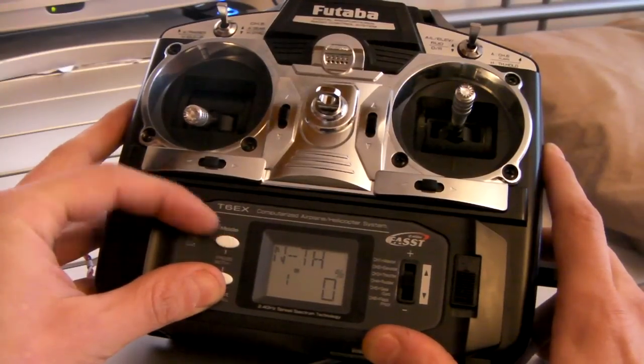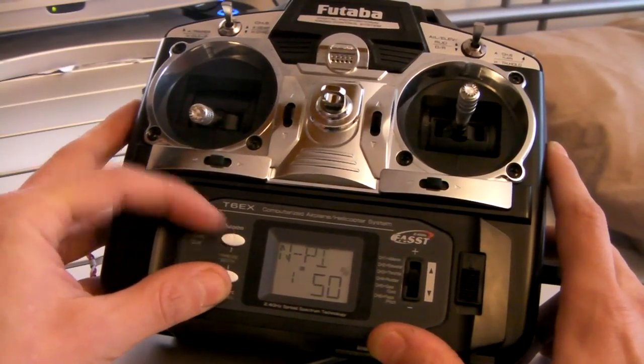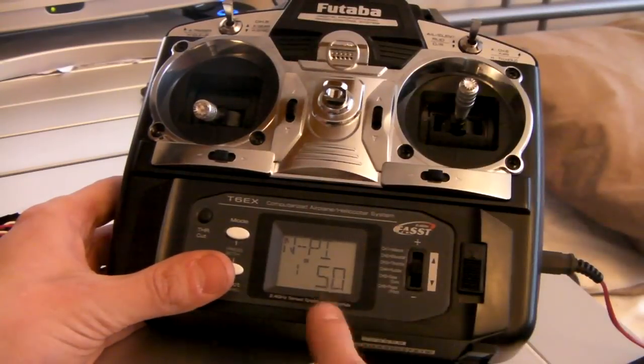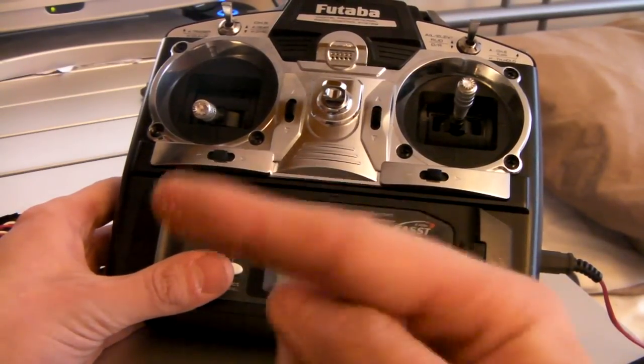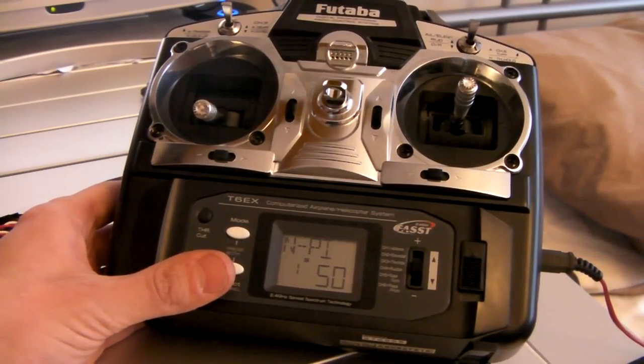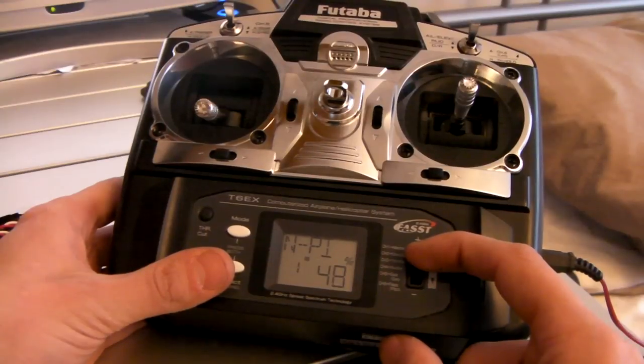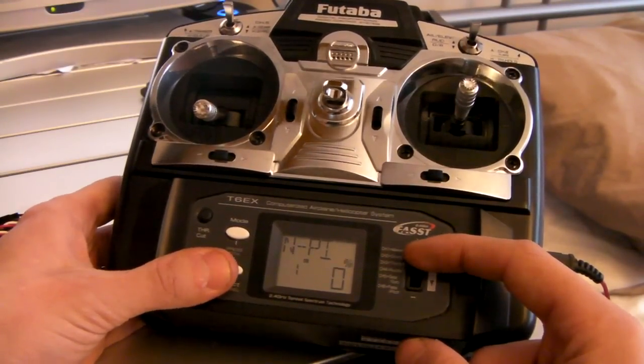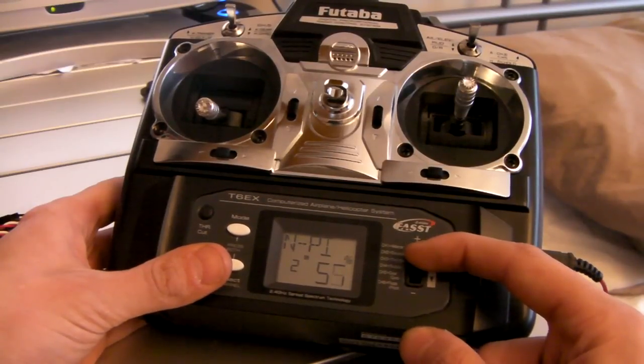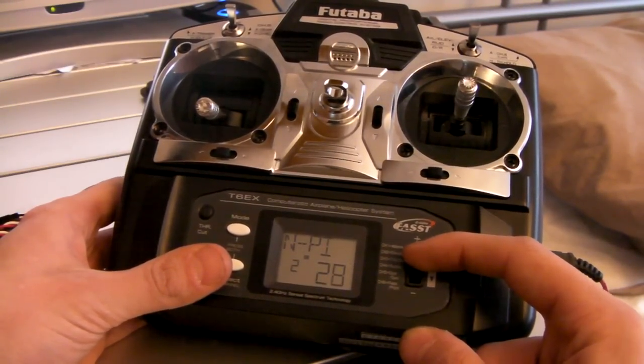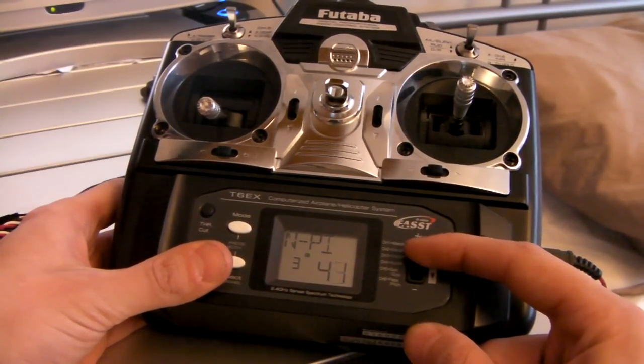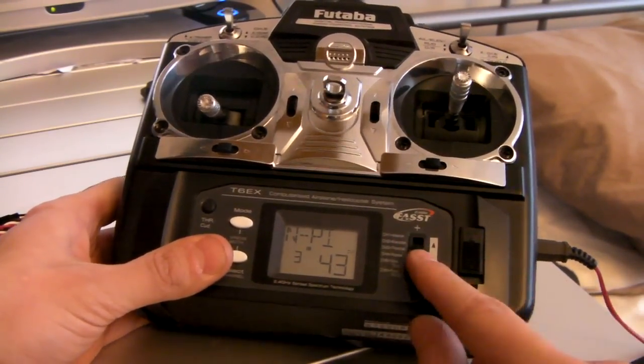We want to set stick position 1 to 50%, which on my helicopter is zero pitch, but we want to go right down to 0. Number 2, we'll set that at 25. Position 3, center stick, which is 50. Then 75 and 100. Make sure you're in normal mode.